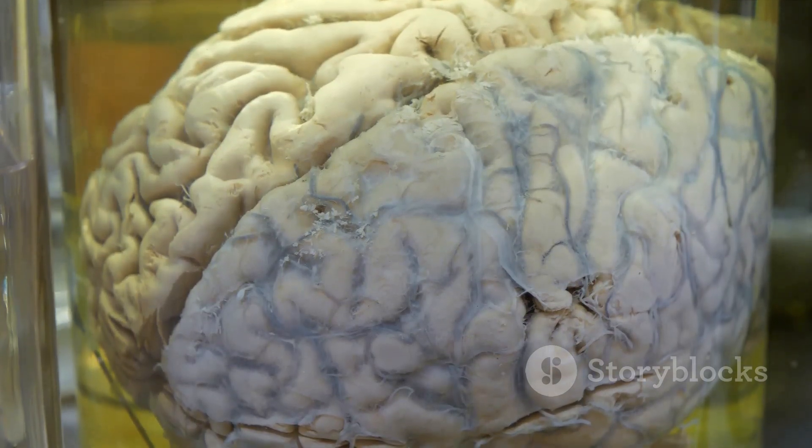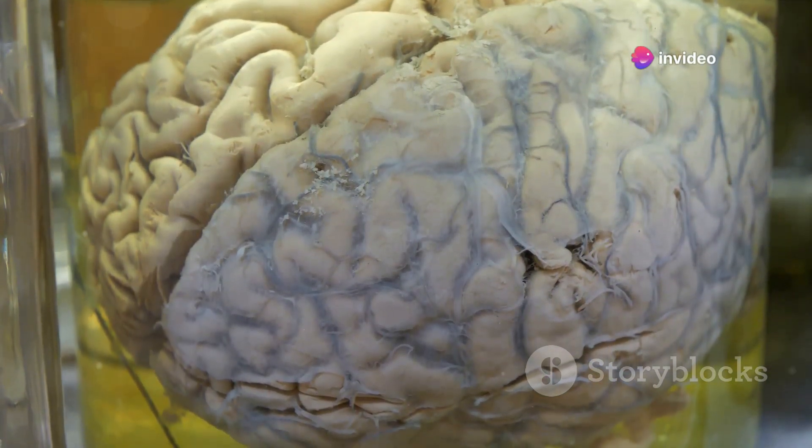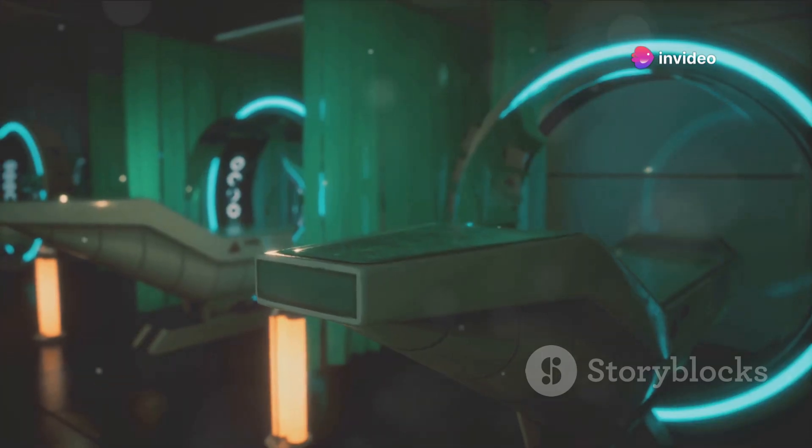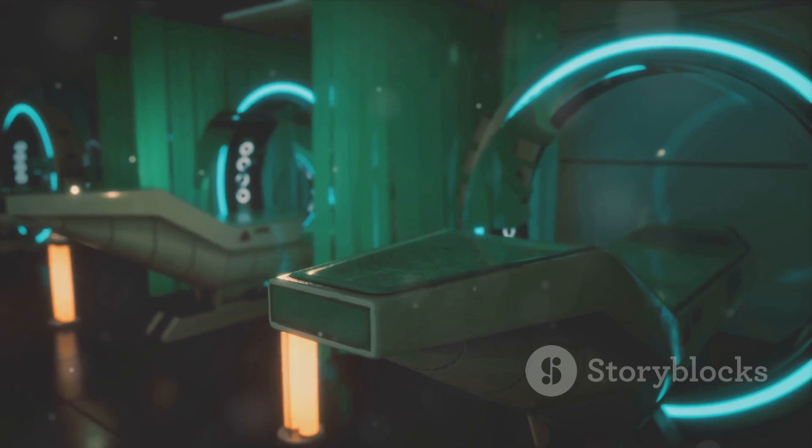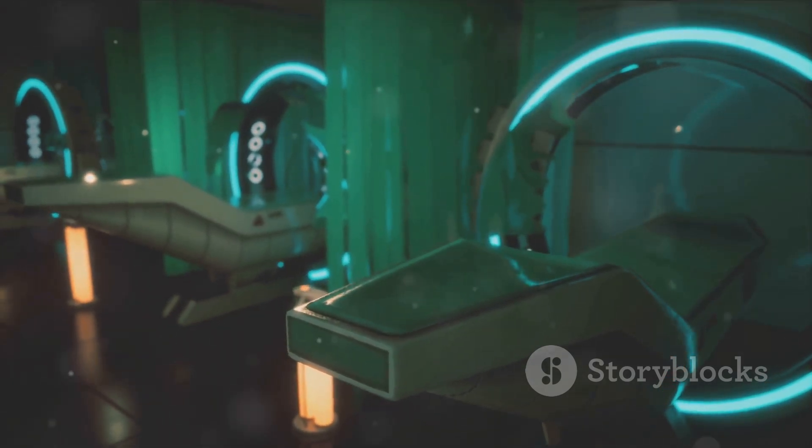For instance, the hippocampus, often referred to as the memory hub, plays a crucial role in storing autobiographical and spatial memories. Moreover, our brain organizes information in a way that makes it easier to retrieve when needed. This is done through the process of association.